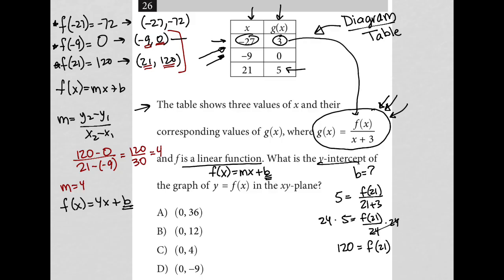How do I find b? I can go back and take this ordered pair again and say, this point is telling me that when f(x) is 0, x is negative 9. So I'd have 0 equals 4 times negative 9 plus b. And 0 equals negative 36 plus b. Therefore, 36 is equal to b. And there's my y-intercept.